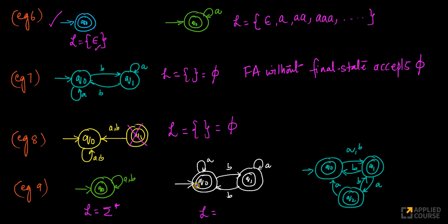What about this machine? The initial state and the final state — both states are final states. If you give epsilon, a, or b — any string — this also has sigma star as its language. Similarly, this finite automaton with three states where all three are final states also accepts sigma star. Every state is a final state and all transitions are present, so the language accepted is sigma star.